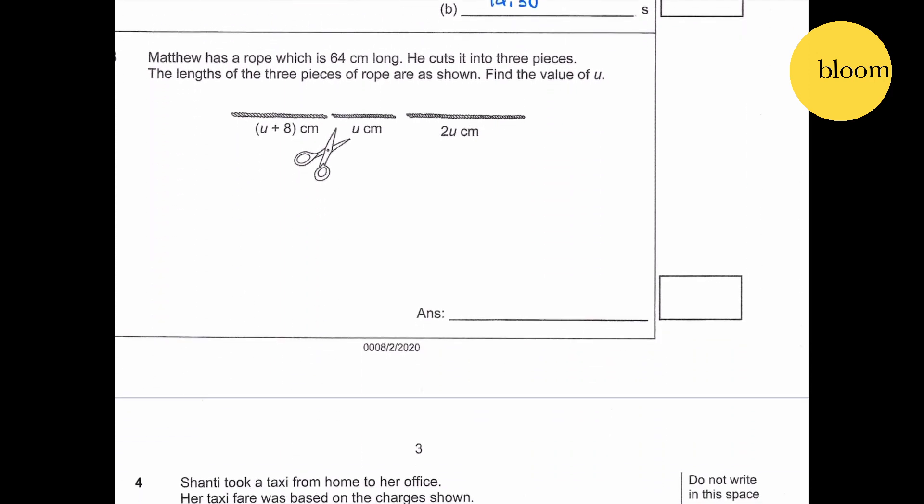Question 3. Matthew has a rope which is 64 cm long. He cuts it into 3 pieces. The lengths of the 3 pieces of rope are as shown. Find the value of U.